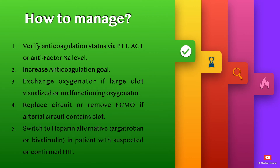How to manage clotting on ECMO: Verify anticoagulation status via PTT, ACT, or anti-factor Xa level, and increase the anticoagulation goal. Exchange the oxygenator if a large clot is visualized or the oxygenator is malfunctioning. Replace the circuit or remove ECMO if you visualize a clot in the arterial cannula side or in the circuit.